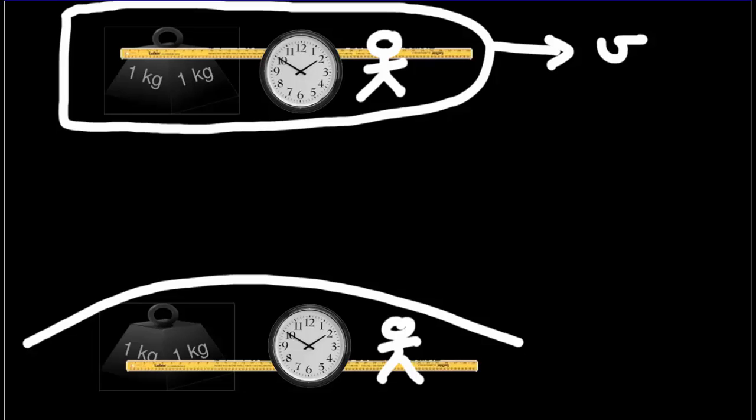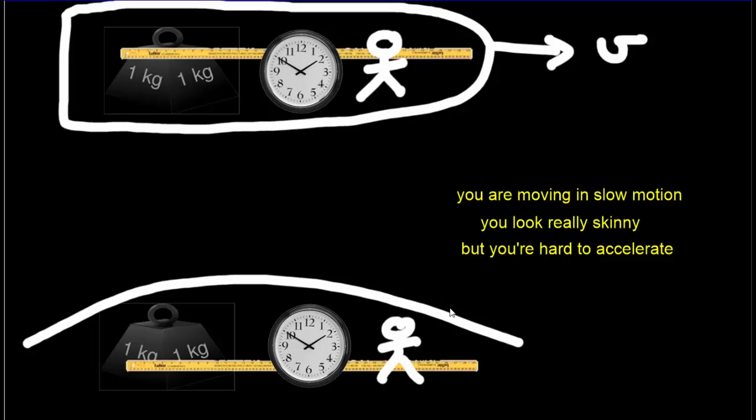Now let's suppose the twin on the Earth looks up and can see what's going on inside the rocket ship. We can imagine that things weren't just a blur because it was moving by so quickly. What he would say is, Brother, my twin, you are moving in slow motion. Your clock is moving more slowly than mine. Twin, you look really skinny. Have you been eating well? Or he might say, your meter stick looks shorter than mine. And if he could shine some sort of laser and try to accelerate his twin brother, he would say, you're harder to accelerate. You've got more mass than I've got. Your one kilogram mass is heavier than my one kilogram mass.